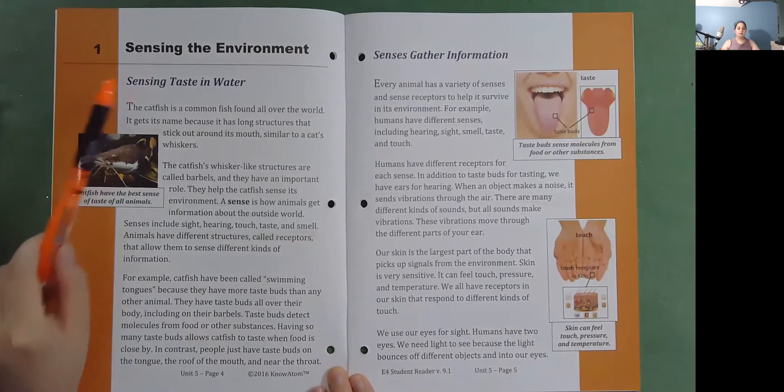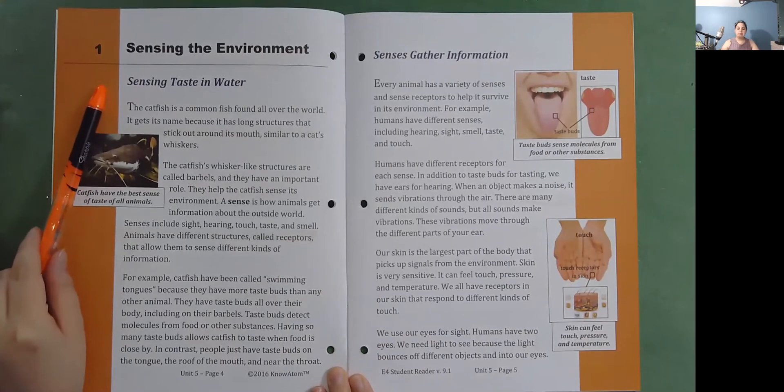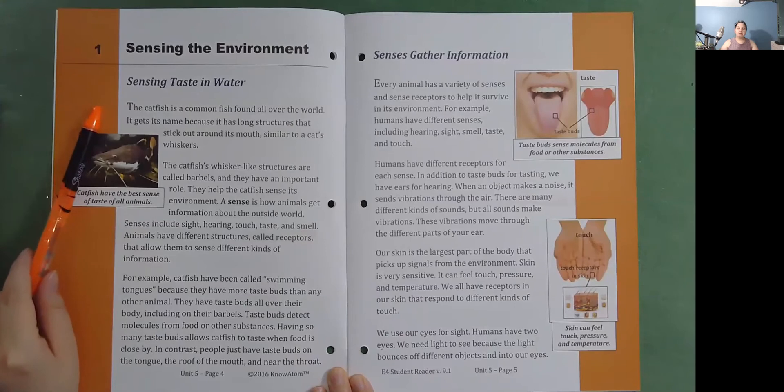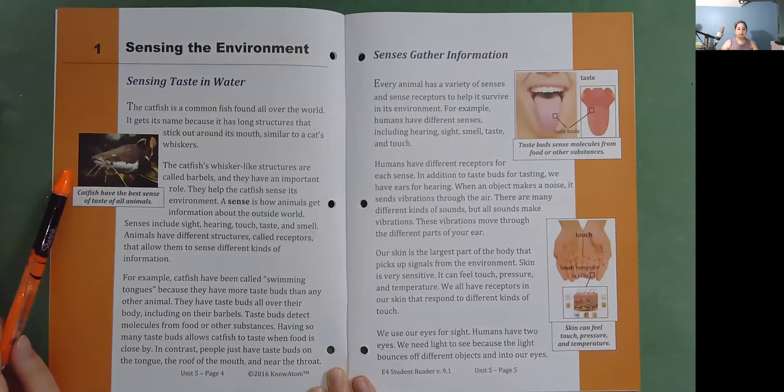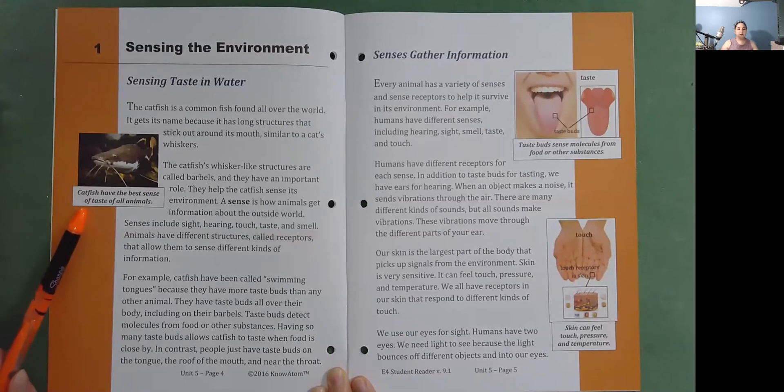Sensing the Environment. Sensing taste in water. The catfish is a common fish found all over the world. It gets its name because it has long structures that stick out around its mouth, similar to a cat's whiskers. The catfish's whisker-like structures are called barbels, and they have an important role. They help the catfish sense its environment.